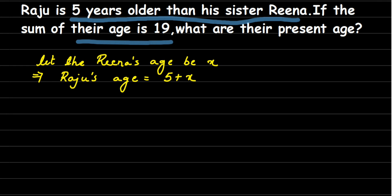We're going to add both ages and equate to 19. Reena's age is x, and Raju's age is x plus 5. So the equation is: x + (x + 5) = 19. Adding x plus x gives 2x, so we get 2x + 5 = 19.